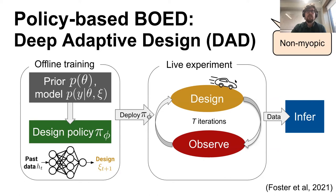One interesting thing we'll come back to is that this approach can actually give us advantages in terms of the policies themselves. The traditional approach turns out to implicitly define a greedy, myopic policy — calculating the posterior and then optimizing the one-step EIG. But the DAD approach actually allows us to learn policies that are even better than the traditional approach, because that traditional approach is itself suboptimal.